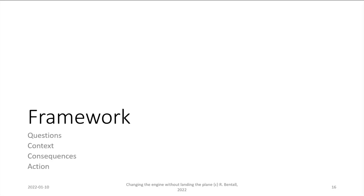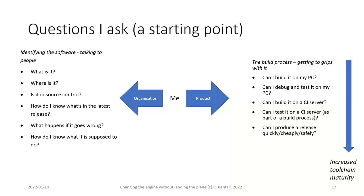I've titled this rather grandly 'framework,' but it's really how I approach problems with technical debt. Most of the time I've had to deal with technical debt is when I've been working on a project where the priority was something else — it's discovered work during the life of the project, like an iceberg waiting to be found by the unfortunate engineer. When thinking about this, I have a series of questions split into two areas: first, looking outside into the organization — what's the software, where is it, is it in source control, how do I know what's in the latest release, how do I know what to do if it goes wrong, how do I know what it's supposed to do? These can be answered by going out into the organization and asking lots of awkward questions — that's the hard bit in many ways.